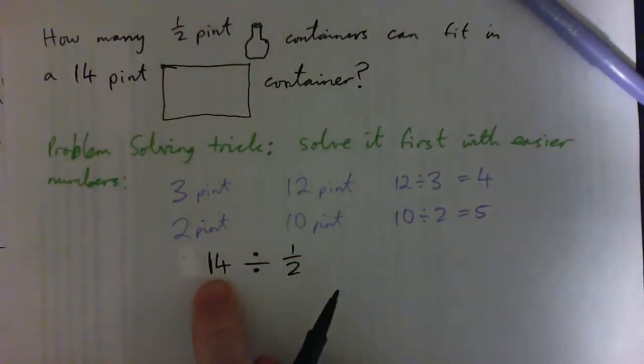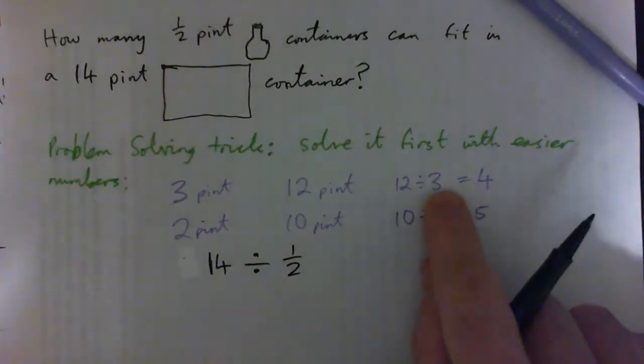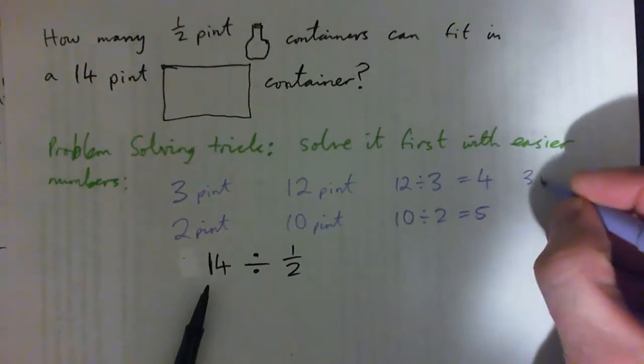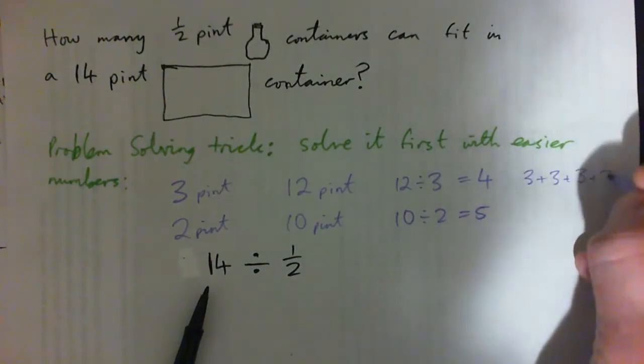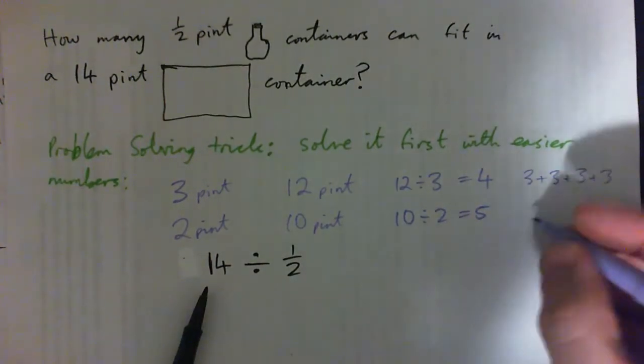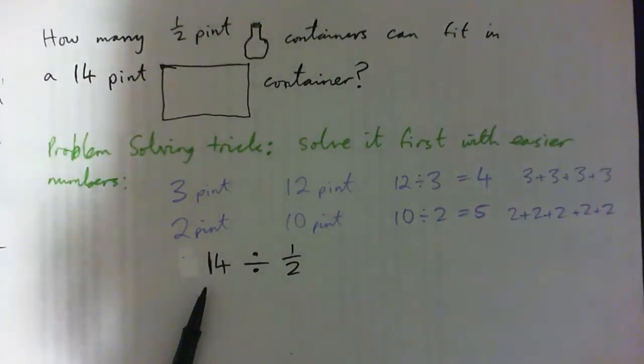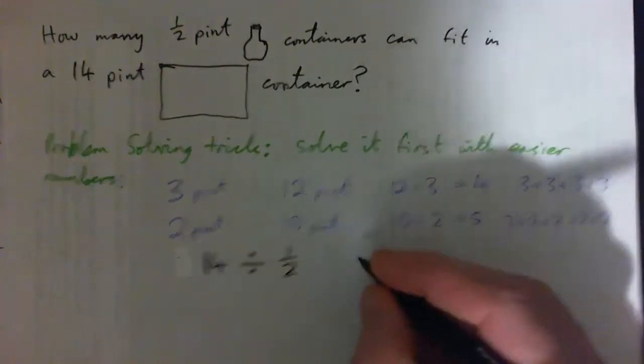Here was how many threes are contained in 12? The answer is 4 because 3+3+3+3 gives 4. How many twos are contained in 10? Five, because there's five of them. How many halves are contained in 14?